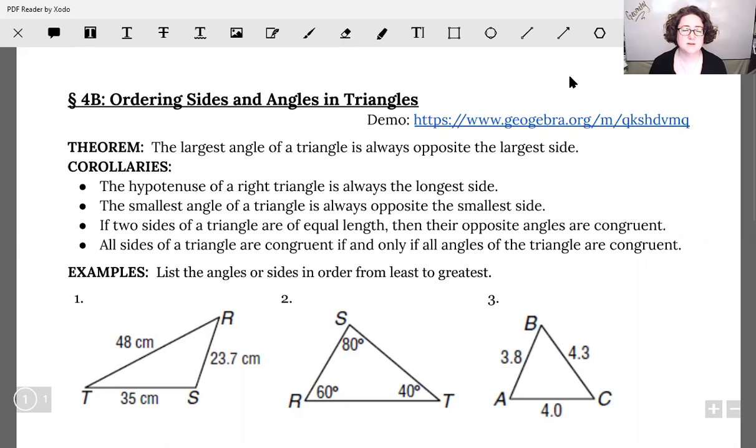We also have these things called corollaries, which are addendums, add-ons that relate to that same idea. Think about right triangles. The hypotenuse on a right triangle is always opposite the 90-degree angle. In a right triangle, the 90-degree angle is the biggest angle, so the biggest side, the hypotenuse, must be opposite from it. We could also say the smallest angle of a triangle is always opposite the smallest side. If we have two sides that are equal, like an isosceles triangle, then the two angles they're opposite from are also equal. If all sides of a triangle are congruent, that means all the angles are congruent. That's what lets us interchangeably use that wording equilateral or equiangular. We can write that as a biconditional and say all sides of a triangle are congruent if and only if all the angles are congruent.